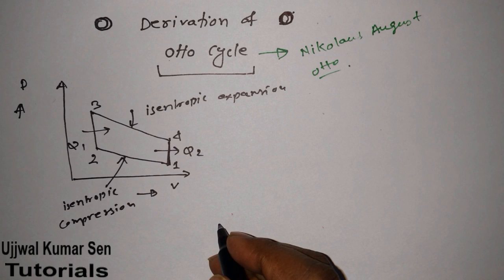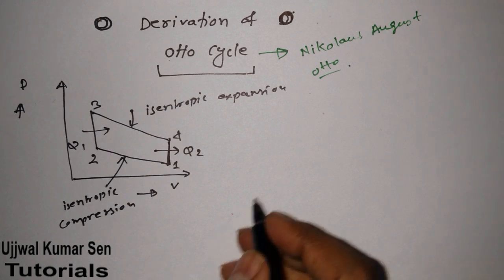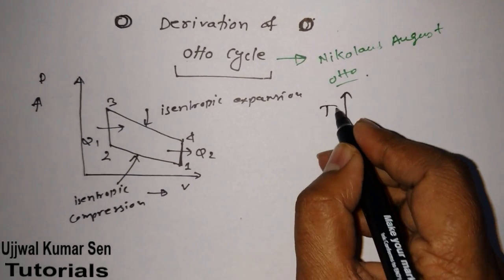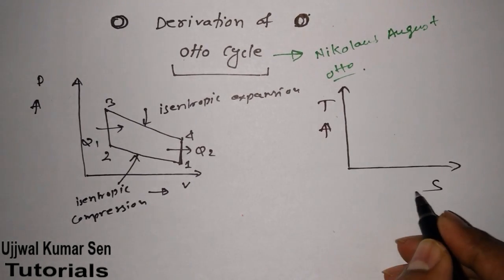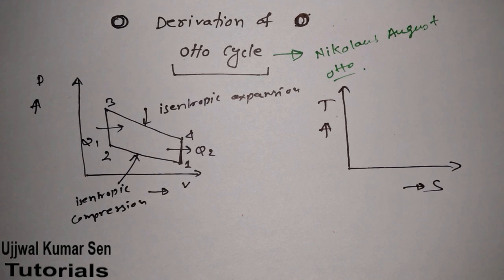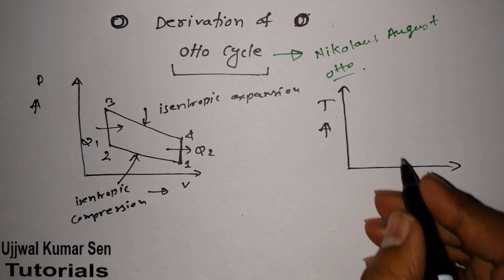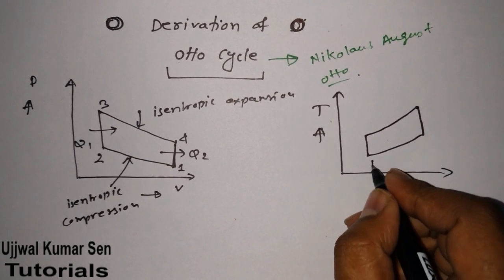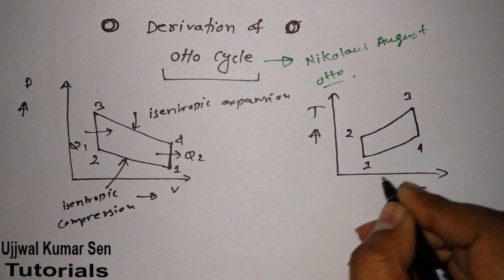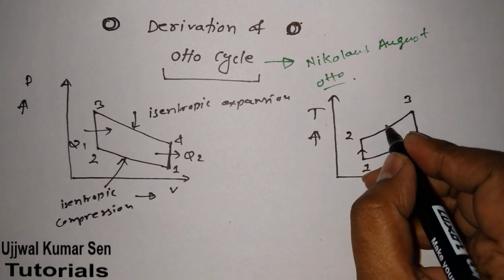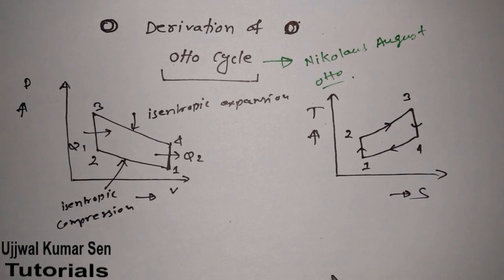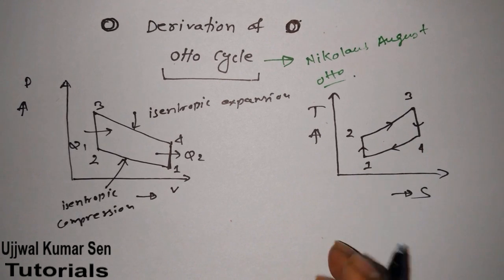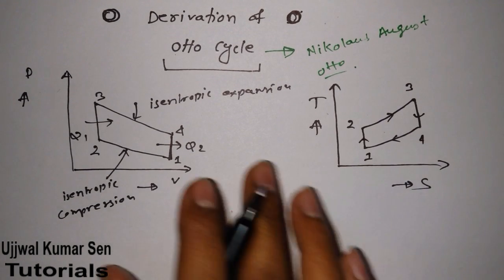If you draw the TS diagram of this cycle, it would look like this. T is for temperature and S is for entropy. This is also a simple diagram — if you practice a little bit you can definitely draw it. The points are 1, 2, 3, and 4. From 2 to 3 is a constant volume process, and from 4 to 1 is also a constant volume process.